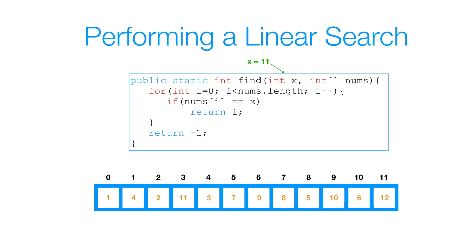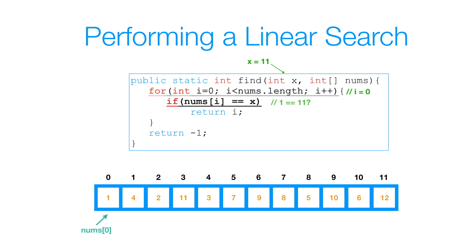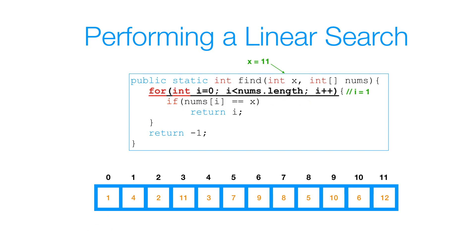Let's perform a linear search on this array and try to find the element with data 11. We go to our for loop — at this point i is equal to 0. We check: is nums of i equal to 11? No, nums of 0 is equal to 1, so it's not equal to 11. We continue the for loop. Now i is equal to 1. Is nums of 1 equal to 11? Well, nums of 1 is equal to 4, and 4 is not equal to 11. So we continue.